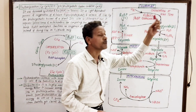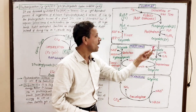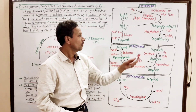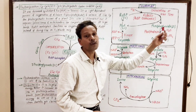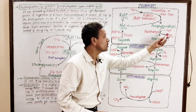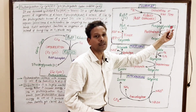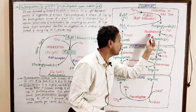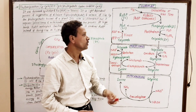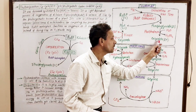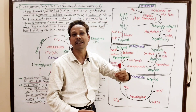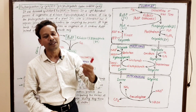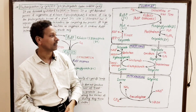This phosphoglycolate undergoes dephosphorylation in the presence of water. The reaction is catalyzed by phosphatase to produce glycolate, another 2-carbon compound. That is why it is called the C2 cycle.